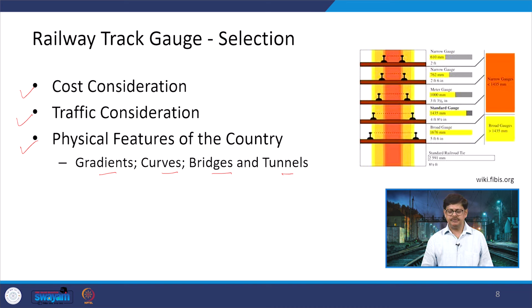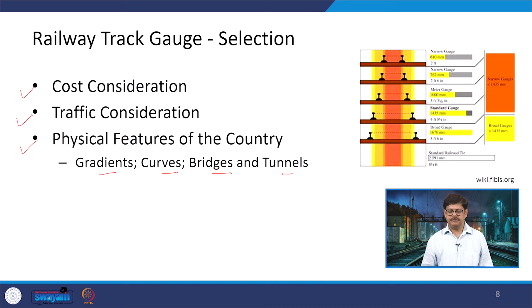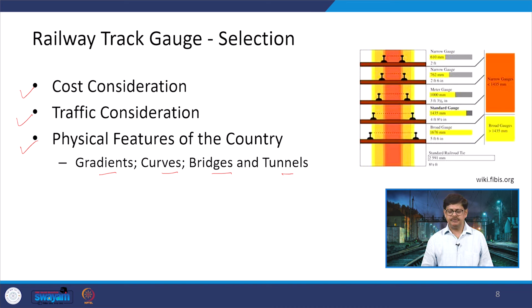Now let us consider how to select a railway track gauge. This is decided on the basis of: first, cost — whether you implement the biggest or smallest gauge, the cost will be different; second, traffic considerations — what type, amount and load of traffic; and third, the physical features of the country — gradients, curves, bridges and tunnels — these become important aspects in deciding which gauge to select.